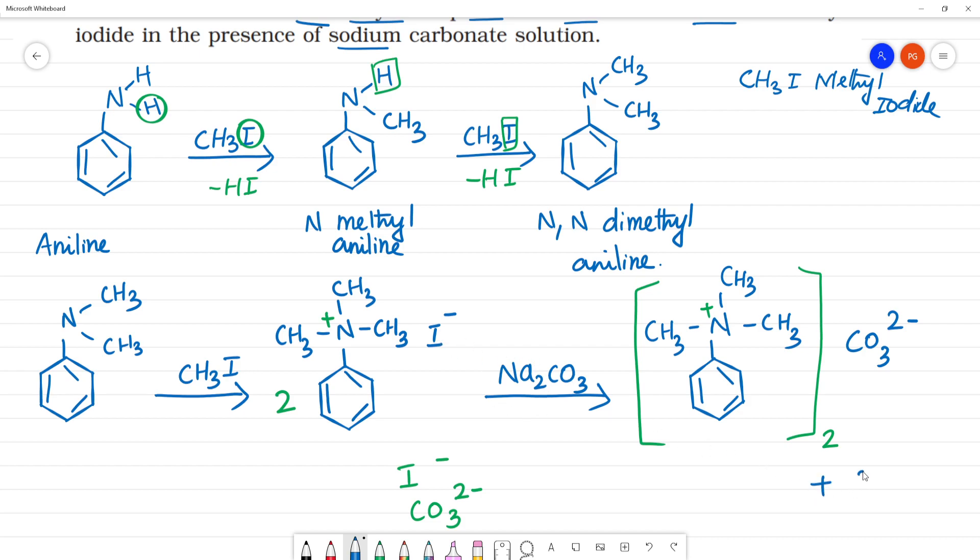I minus will be replaced by CO3 2-. This CO3 is 2-. That's why we have two molecules. Now, this is how it goes.